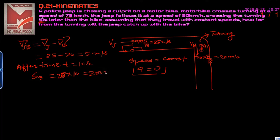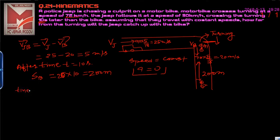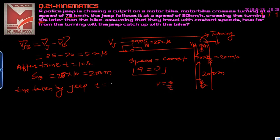This means when the police jeep arrives at the turning point, the bike has already moved 200 meters ahead. We now calculate the time taken by the jeep to cover this 200-meter gap using relative speed. Time equals distance divided by speed, so time equals 200 divided by 5, which gives 40 seconds.